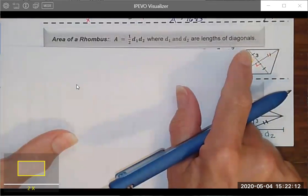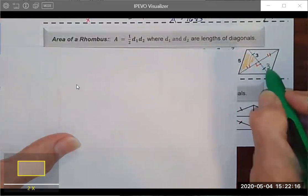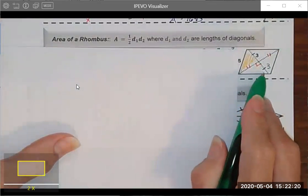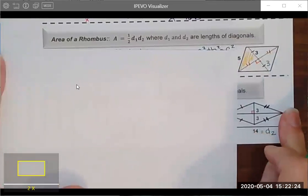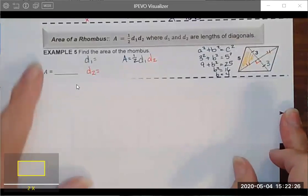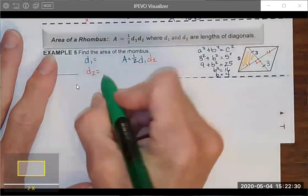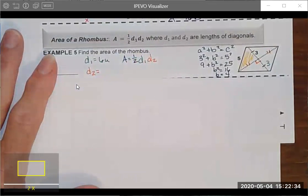So if this segment is 3 then I can surmise that this segment is also 3. So I can find the length of one of my diagonals but I don't have enough information to find the length of the second diagonal. First things first. The length of the first diagonal is going to be 3 plus 3 which is 6 units and I don't know the length of the second diagonal.